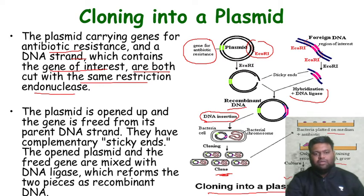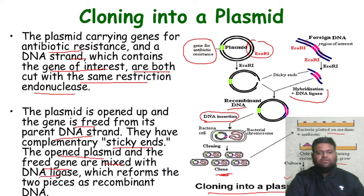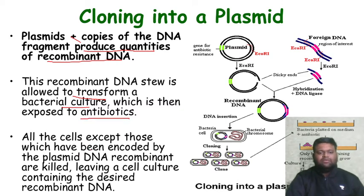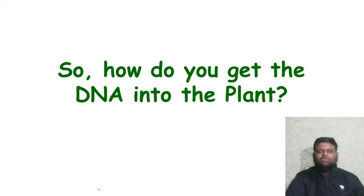The plasmid is cut with restriction enzyme, freeing it from its parent DNA and creating sticky ends. The freed gene and opened plasmid are mixed with DNA ligase, which reforms them as a recombinant DNA molecule. The recombinant DNA contains a copy of the DNA fragment that produces quantities of recombinant DNA. This recombinant DNA transforms a bacterial culture, which is then exposed to antibiotics. All cells except those encoded by the recombinant DNA are killed, leaving a cell culture containing the desired recombinant DNA.